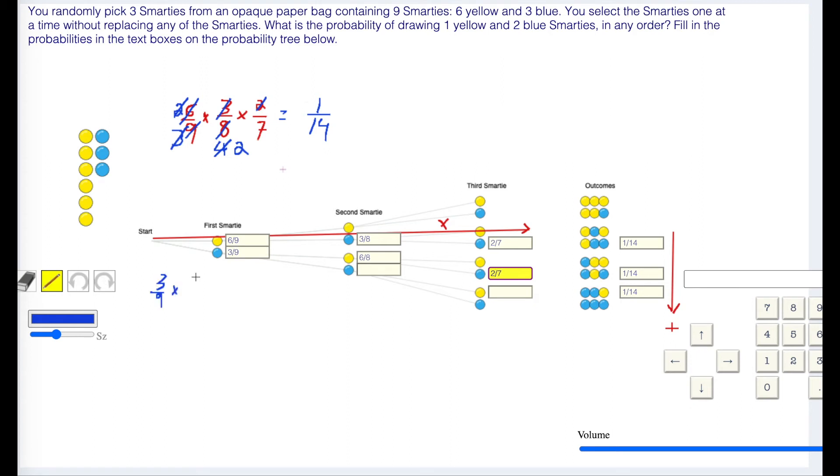We have 3/9 times 6/8 times 2/7. Three goes into 3 once, 3 goes into 9 three times, 3 goes into 3 once, 3 goes into 6 twice. Two goes into 2 once, 2 goes into 8 four times, 2 goes into 2 once, 2 goes into 4 twice.